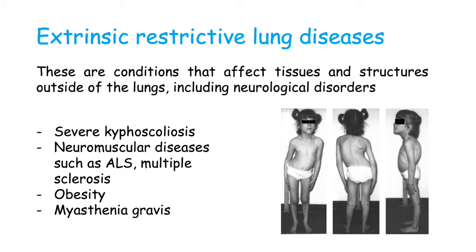Extrinsic restrictive lung diseases are different. These are conditions that affect tissues and structures outside of the lungs, including some neurological disorders. For example, someone with severe scoliosis, severe kyphosis, or kyphoscoliosis will have impaired expansion of the chest wall due to the deformity. This is a type of extrinsic restrictive lung disease — the lungs have a hard time expanding since there is a deformity in the chest wall, as shown in this image of severe scoliosis.